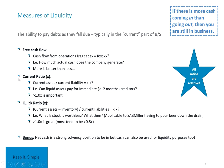Jumping to more traditional ratios: there's something called the current ratio. Your current assets are assets you can realize within 12 months — they should convert into cash within 12 months. Your current liabilities are creditors and expenses you should pay within 12 months. The current ratio is simply current assets divided by current liabilities. You obviously hope this ratio is higher than one, meaning you have more liquid assets than liquid liabilities, so you can realize your assets and pay off all liabilities in the short term.